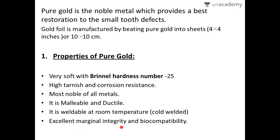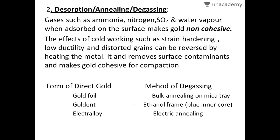The second topic is desorption annealing or degassing. When pure gold is kept in an environment, certain gases such as ammonia, nitrogen, sulfur dioxide, and water vapor get absorbed on the surface of the gold. This makes the gold non-cohesive — non-bondable and non-compactable — because these absorbed gases eliminate atomic attraction and cohesion forces.